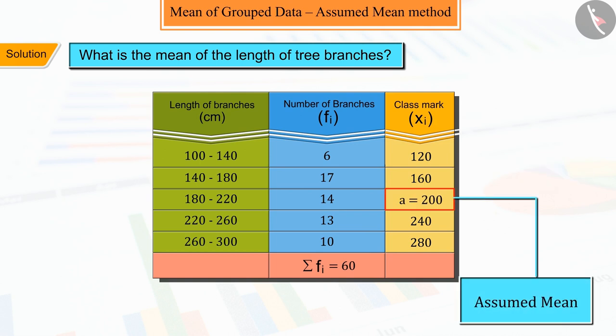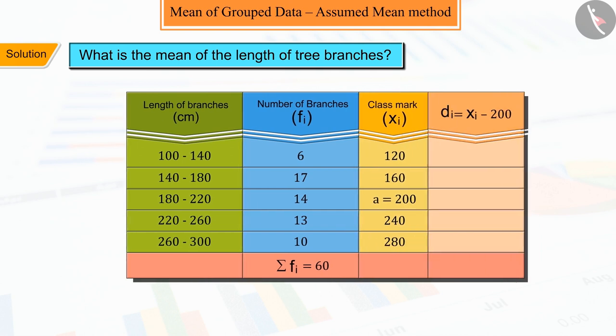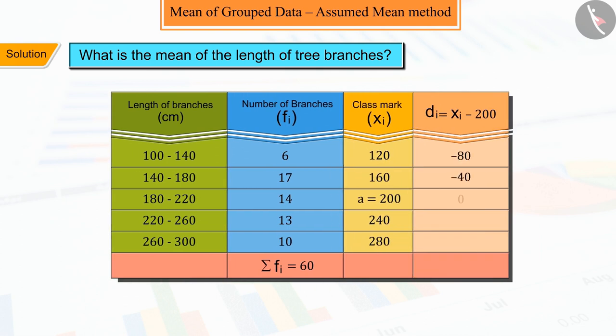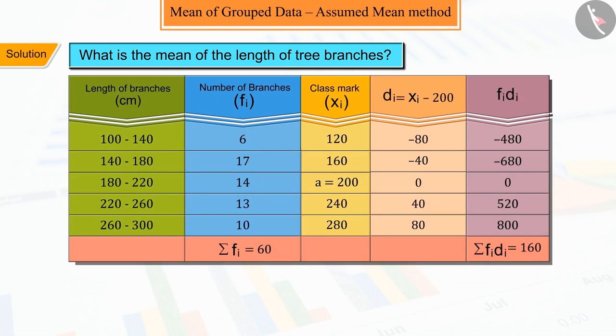from the table, we choose a = 200, where we find the difference di between a and each xi, and find the deviation of xi from a. We multiply each di by its corresponding frequency fi, which gives the product fi·di, the sum of whose products are represented in the table below.